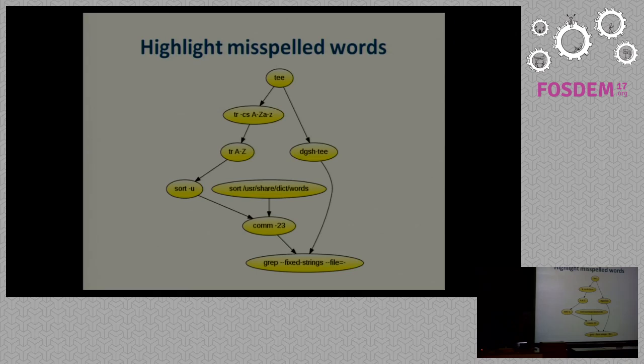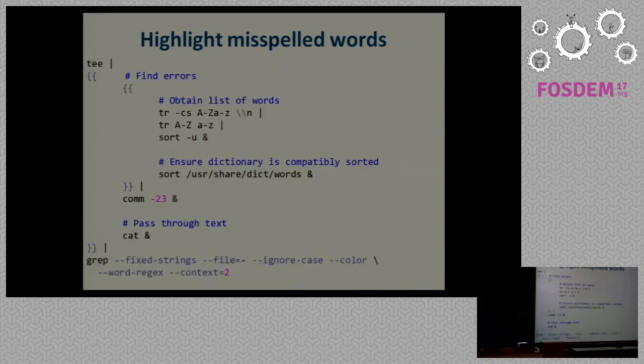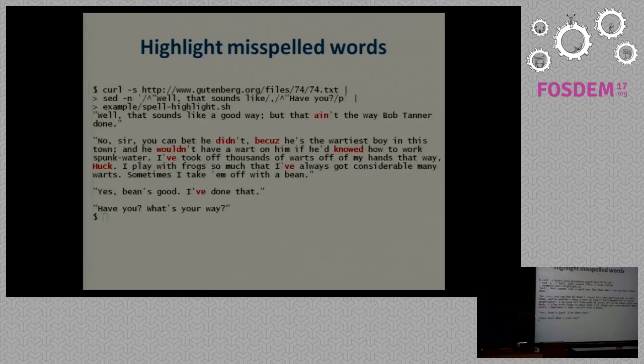Getting back to the misspelled words, the pipeline I initially showed was maybe impressive, but it doesn't show us where the words occur. We can do that if we find the list of common words, and then we pipe that to fgrep. And for some more show, we also ask fgrep to color the words together with the original text. So what I'm doing here is I have one multipipe block to find the errors, and another one to pass through the text to fgrep with fixed strings and colors to get a result such as this if I run on Tom Sawyer.